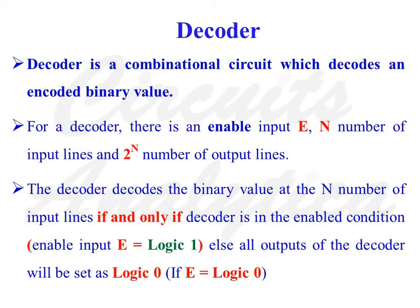A decoder is a combinational circuit which decodes an encoded binary value. For a decoder, there is an enable input E, n number of input lines, and 2-to-the-n number of output lines. The decoder decodes the binary value at the n input lines if and only if the decoder is in the enabled condition. Else, all outputs of the decoder will be set as logic 0.